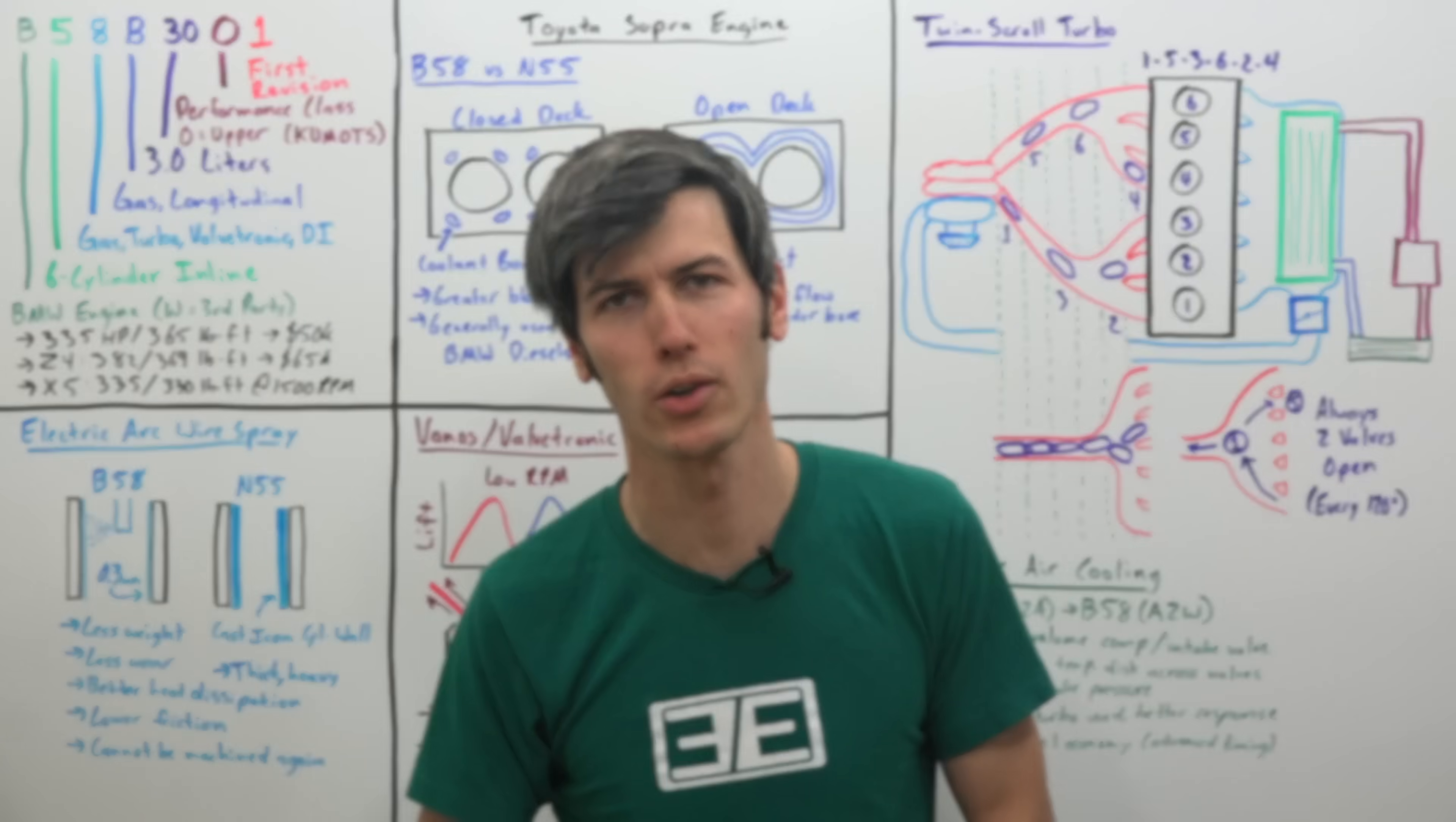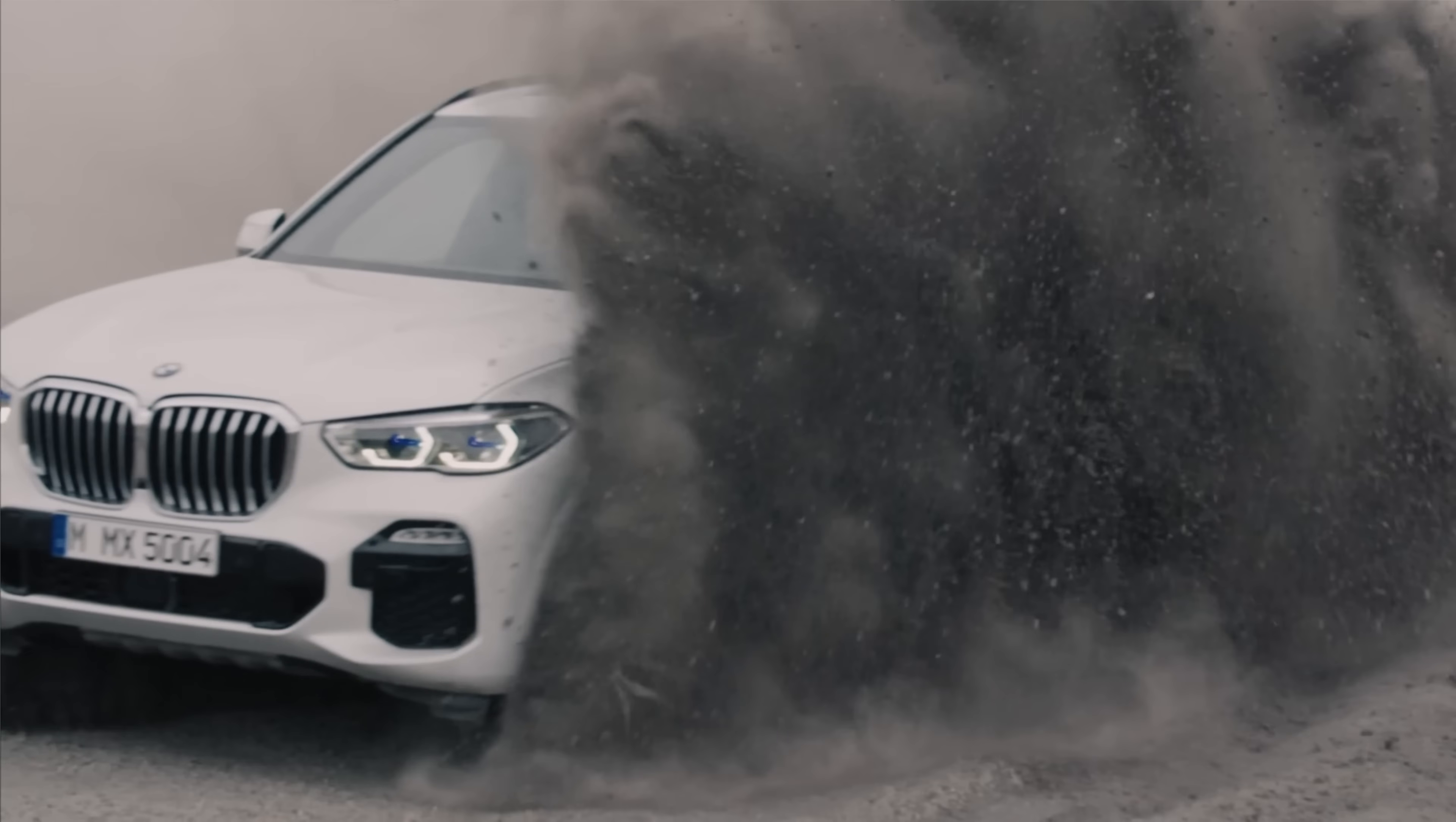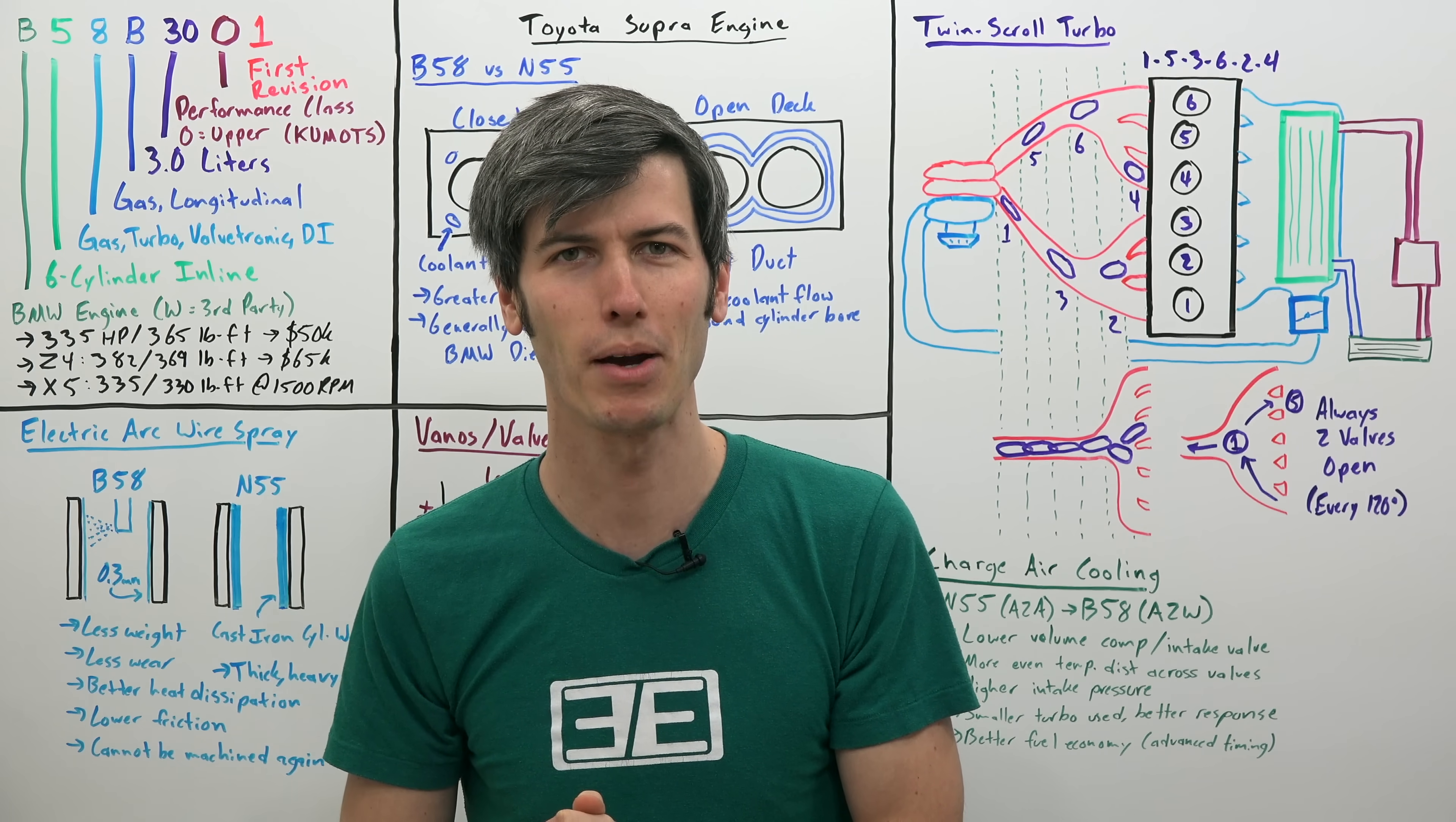It has already won three Wards Auto top 10 engine awards. It won in 2016 when it was used in the BMW 340i, it won in 2017 in the BMW M240i, and it won in 2019 with the BMW X5. So yes, if you have not figured out yet, BMW makes the engine for the new Toyota Supra and just about everything else.